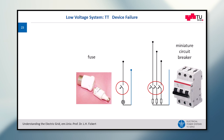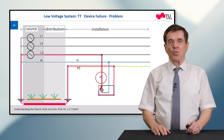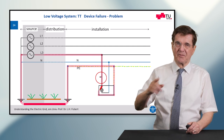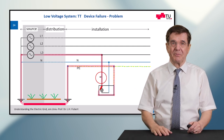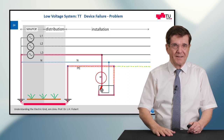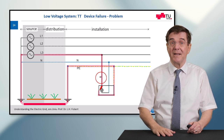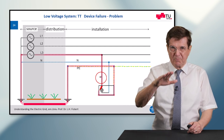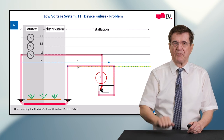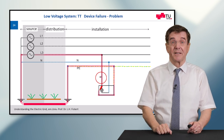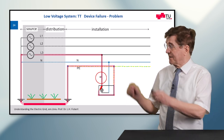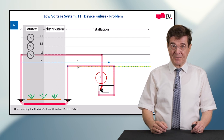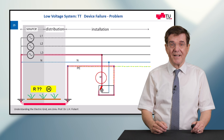There is one weak point in this concept: it is the return path through physical ground. Imagine you live in a country with dry soil — this dry soil is a bad conductor and its resistance may be so high that it depresses the current to a level too low to trip the fuse or miniature circuit breaker. Then we have a problem: the faulty device is still energized but has not tripped out. This brings us to the next chapter.